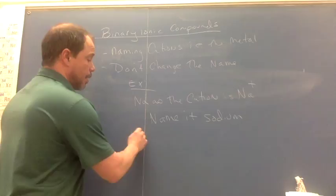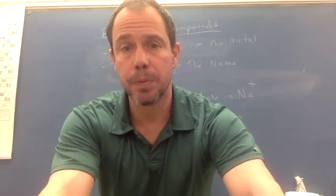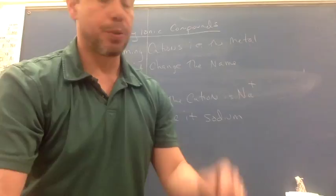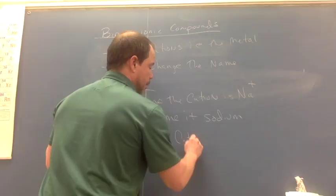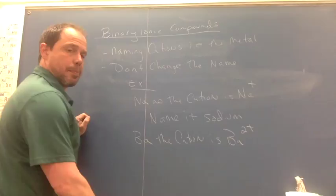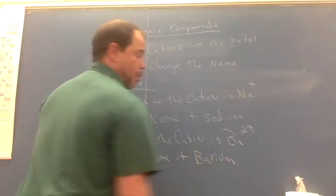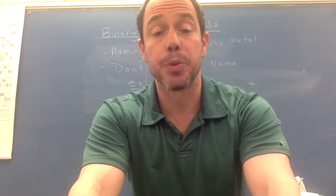Another example: barium. Barium is a metal. It becomes a cation when it loses its electrons, getting a 2+ charge — it loses two valence electrons since it's in group 2. So the cation is Ba2+, and the name is simply barium. The takeaway for cations is that all you have to do is rewrite the name given on the periodic table. Lithium is lithium as a cation, et cetera. Don't change the name — keep it the same.